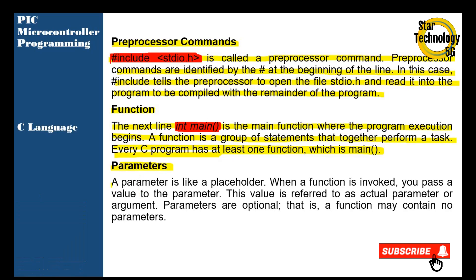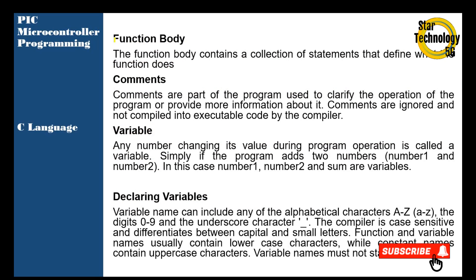Next is parameters. A parameter is like a placeholder — when a function is invoked, you pass a value to the parameter. This value is referred to as an actual parameter or argument. Parameters are optional, that is, a function may contain no parameters. The function body contains a collection of statements that define what the function does.